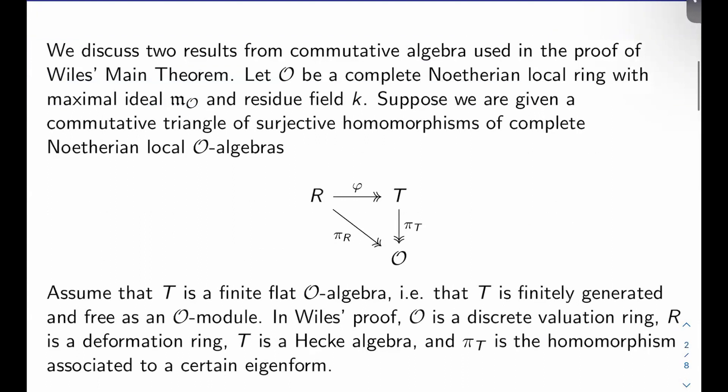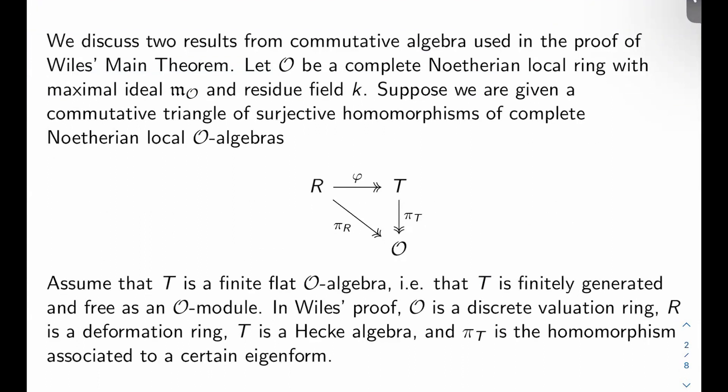So what are we doing here? We're going to discuss two results from commutative algebra used in the proof of Wiles' main theorem. For us, O is going to be a complete Noetherian local ring with maximal ideal m_O and residue field k. We're also going to suppose that we're given a commutative triangle of surjective homomorphisms of complete Noetherian local O-algebras. Here's the triangle: the first algebra we'll call R and there will be a surjective map φ from R to T. Then there'll be surjective maps π_R and π_T out of R and T respectively to O, and this triangle will commute.